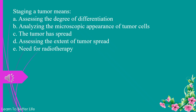Staging a tumor means: a. assessing the degree of differentiation. b. analyzing the microscopic appearance of tumor cells. c. the tumor has spread. d. assessing the extent of tumor spread. e. need for radiotherapy. The answer is d. assessing the extent of tumor spread.